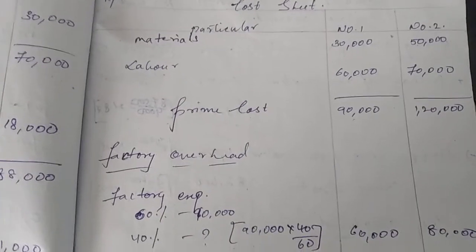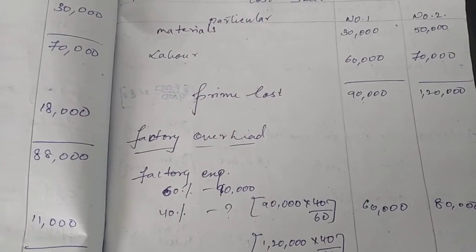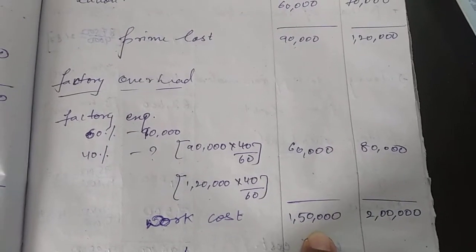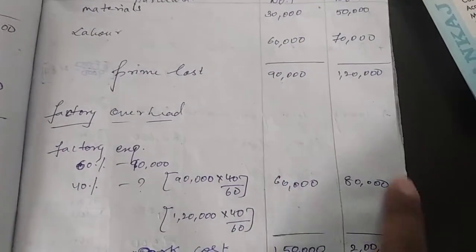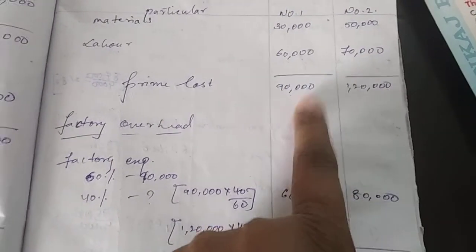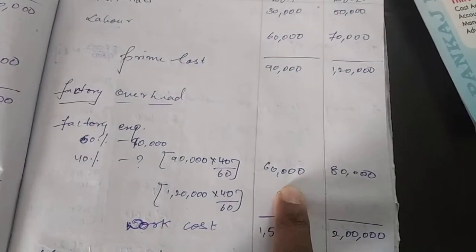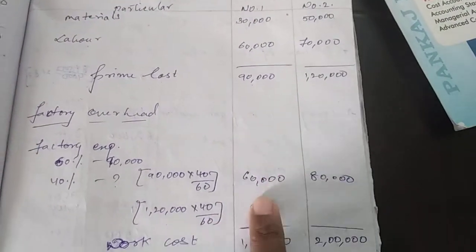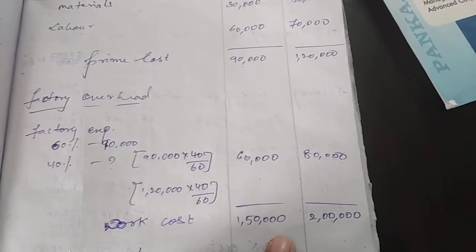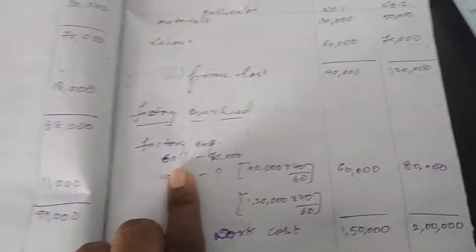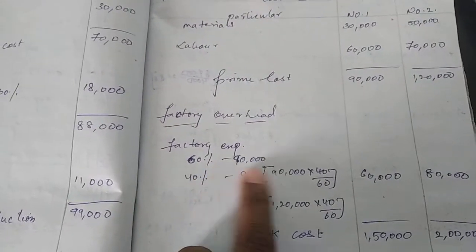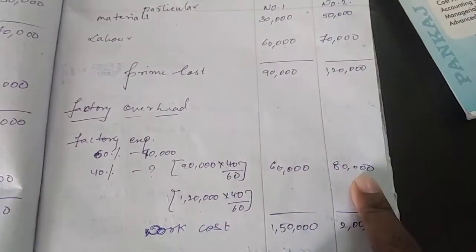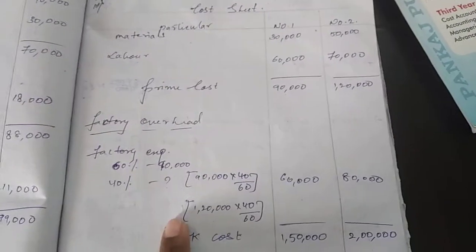Materials: 30,000 and 50,000. Labor: 60,000 and 70,000. Prime cost is calculated up to here, same as previous sums. Now for factory overhead: the question states 40% on work cost. If factory expenses are 40%, then prime cost will be 60%, since 60 plus 40 equals 100%. For Article 1, prime cost is 90,000 at 60%, so for 40% — by cross multiplication — factory overhead is 60,000.